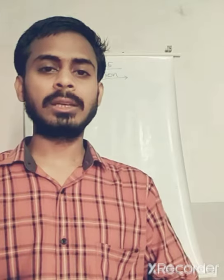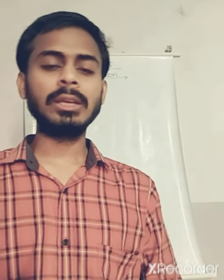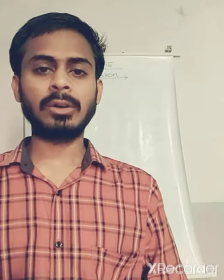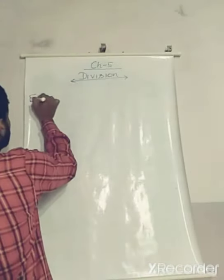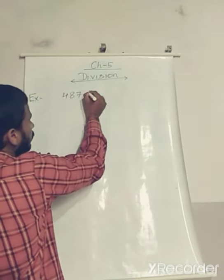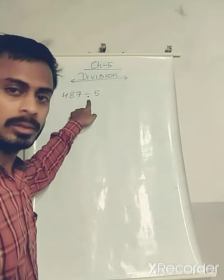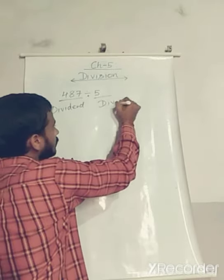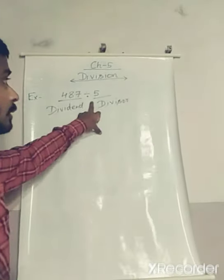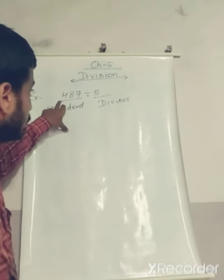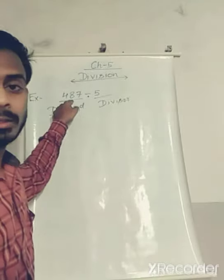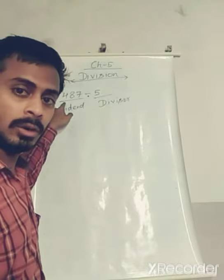So what is Division? The separation of something into different parts is called Division, or we can say the sharing of something among different people is called Division. In math language, when we divide a number by another number, that is called Division. For example, 487 divided by 5 — this is the Division sign. The number which is divided is called the Dividend, and the number by which we divide is called the Divisor.